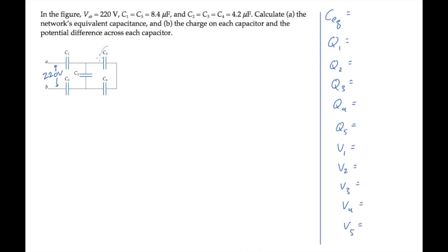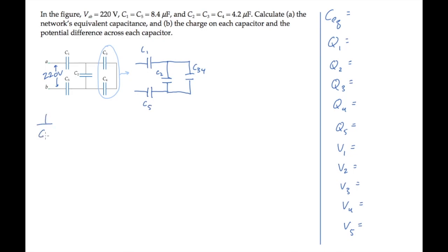Let's start by noticing that these two capacitors, C3 and C4, are connected in series, so we can replace them with one equivalent capacitor that I'll call C34. I'll draw it here along with the other capacitors unchanged. We can calculate the capacitance C34 using the reciprocal rule, because they're connected in series. When you substitute values, calculate, and take the reciprocal, you find that this equivalent capacitance is 2.1 microfarads.